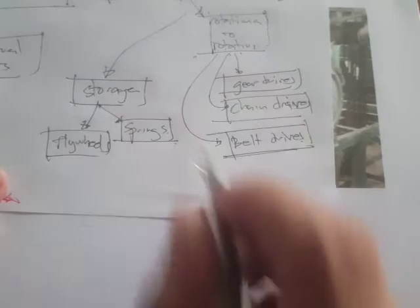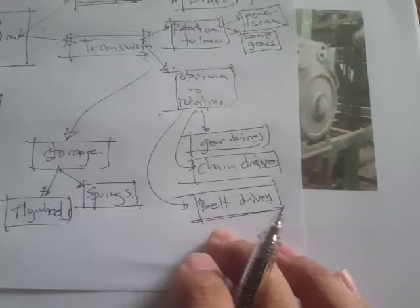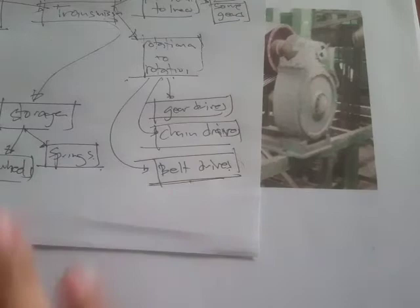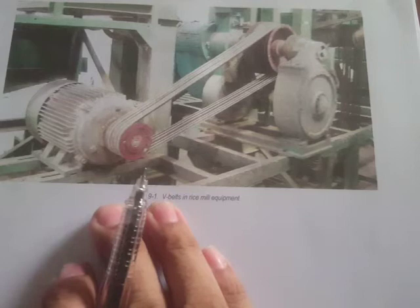So as reviewed from lecture one, there are many types of machine elements. Right now we are going to focus specifically on belt drives — and more specifically, just one type: the heavy-duty V-belts.